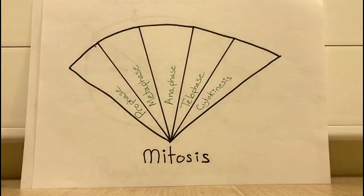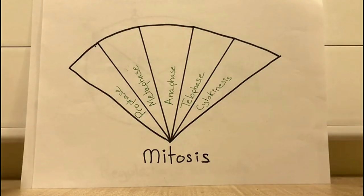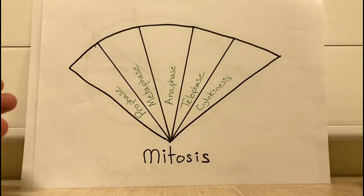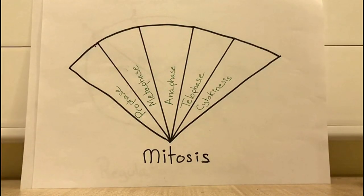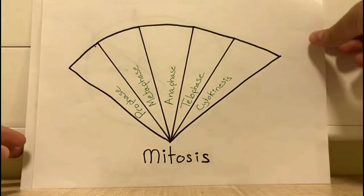Following interphase comes mitosis, which is divided into five different phases. First comes the prophase, then metaphase, followed by anaphase, telophase, and finally cytokinesis, which results in cell division.